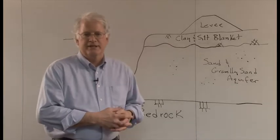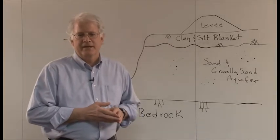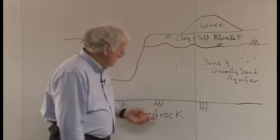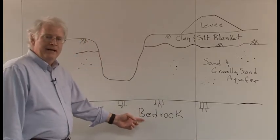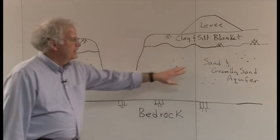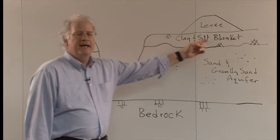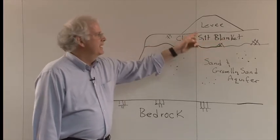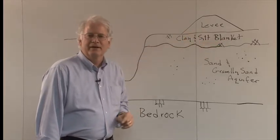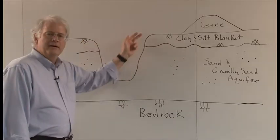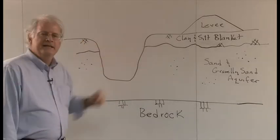First you need the right conditions and these conditions exist at many places along the Mississippi River. We'll start at the bottom with the bedrock layer and on top of that bedrock layer is a sand and gravelly sand aquifer and at the surface of that is a clay and silt blanket and the levee sits on top of everything. Of course the river channel is right over here and it extends down into that aquifer.